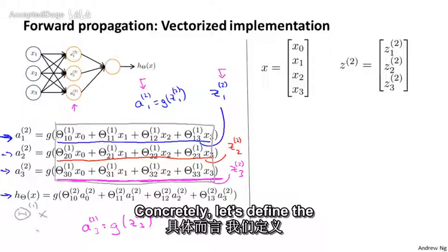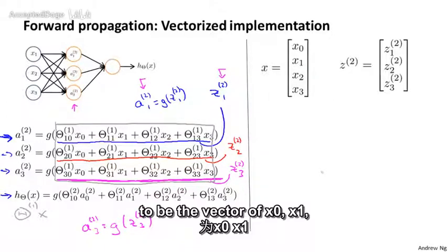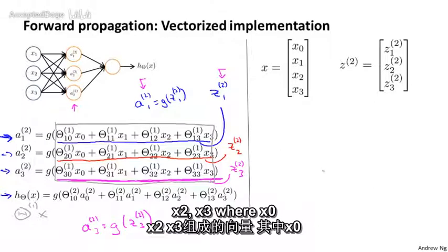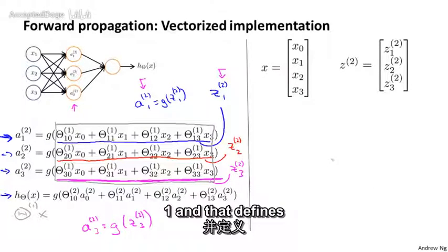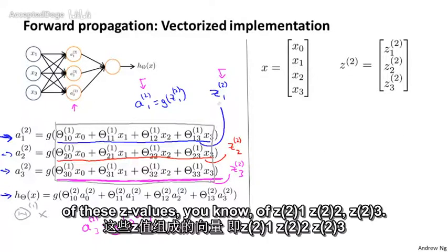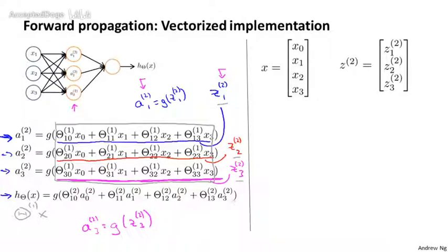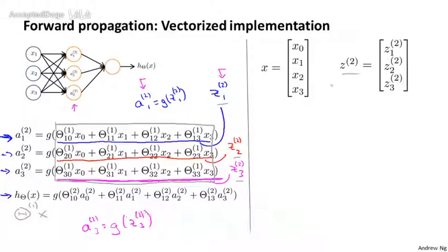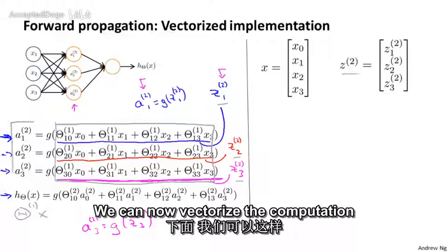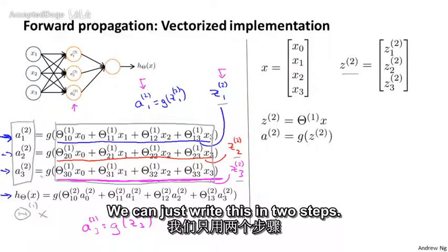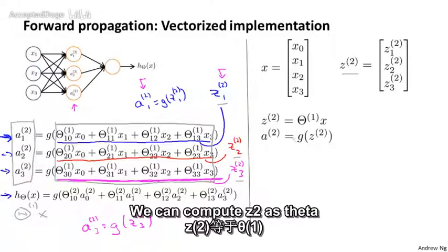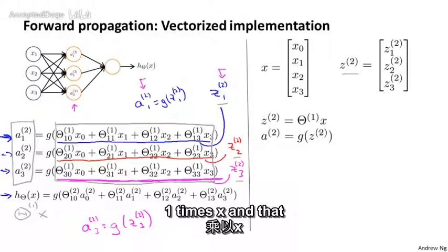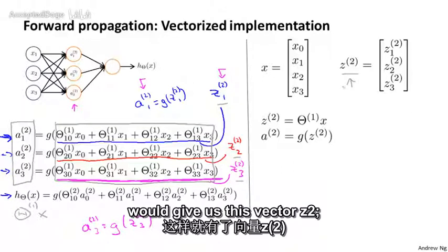Concretely, let's define the feature vector x as usual to be the vector x0, x1, x2, x3, where x0 as usual is always equal to 1. And let's define z2 to be the vector of these z values: z21, z22, z23. Notice that z2 is a three-dimensional vector. We can then vectorize the computation by computing z2 as theta 1 times x, which gives us this vector z2.